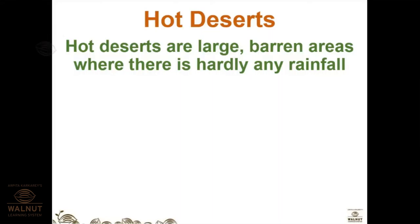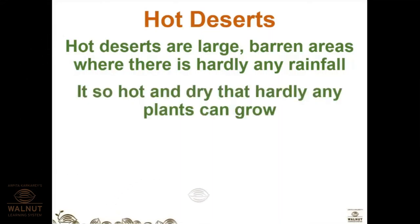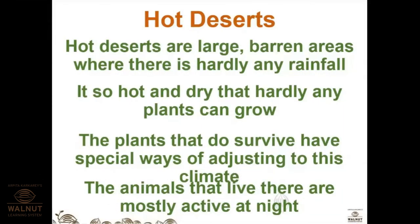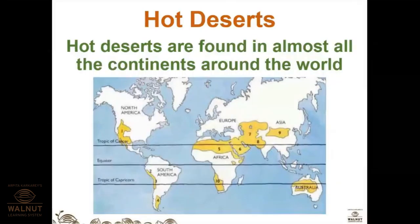Hot deserts are large barren areas where there is hardly any rainfall. It is so hot and dry that hardly any plants can grow. The plants that do survive have special ways of adjusting to this climate. The animals that live there are mostly active at night — animals active during the night are called nocturnal animals.